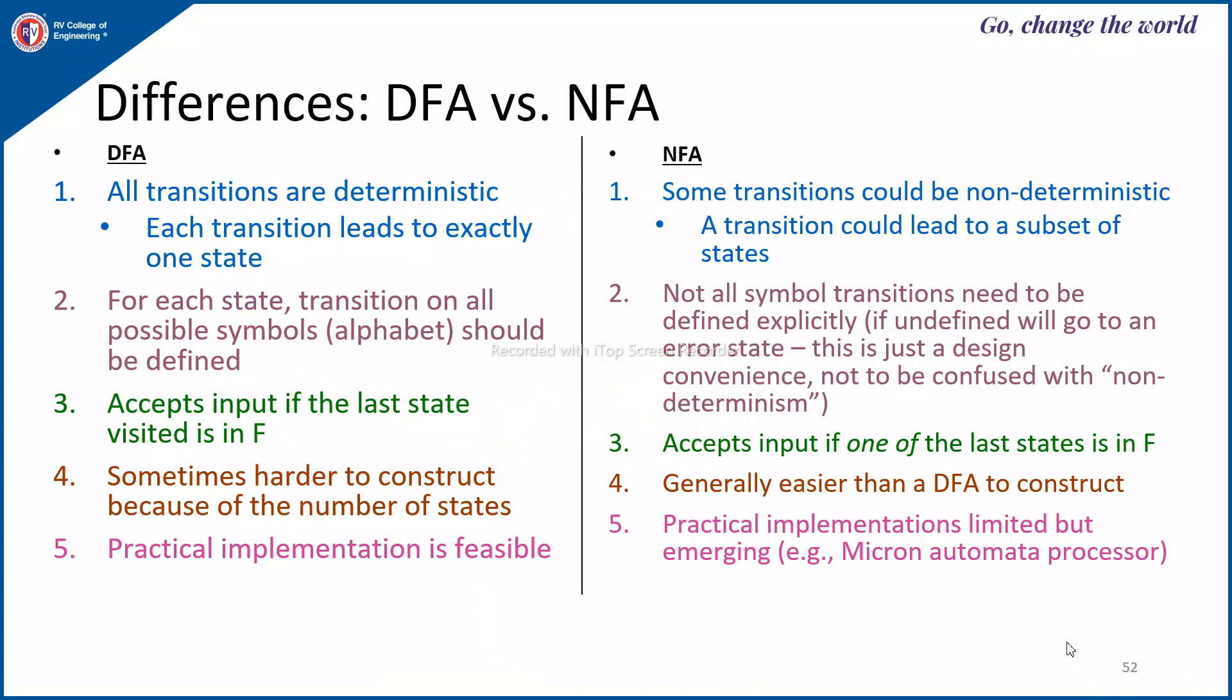Let us see some differences between DFA and NFA. First column represents DFA properties and second column represents NFA. In DFA, all transitions are deterministic. That means, every transition leads to exactly one next state. Whereas, in NFA, some transitions could be non-deterministic. That means, transition could lead to a subset of states.